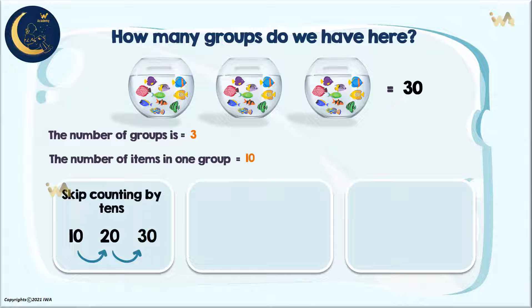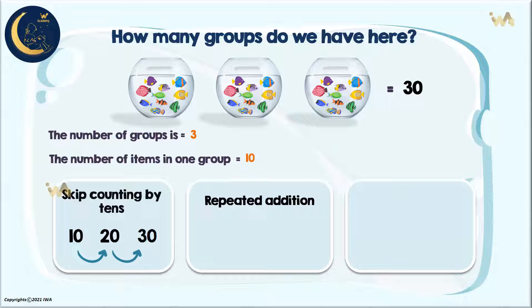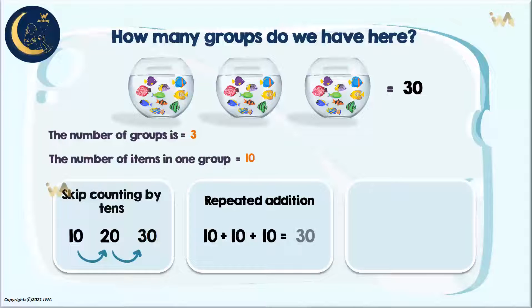Now let's use repeated addition and see together what the result is. Ten plus ten plus ten equals thirty. It is the same result.